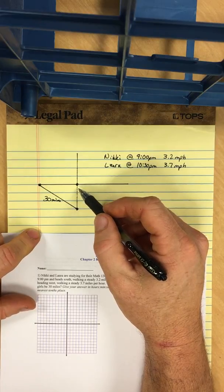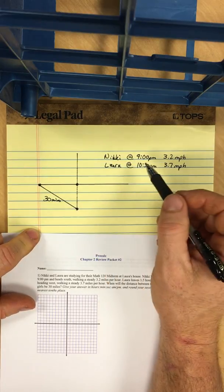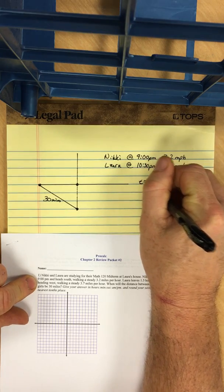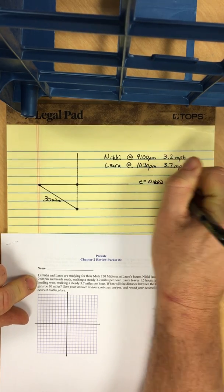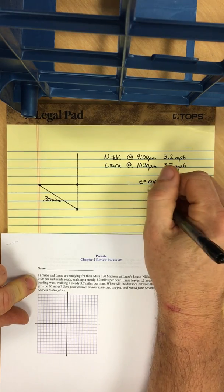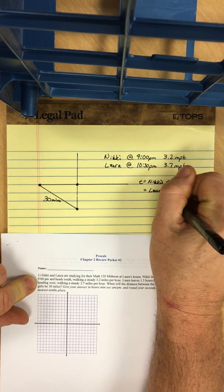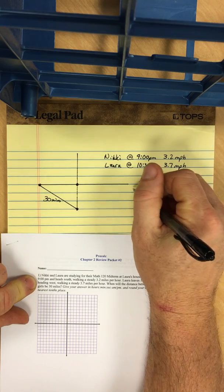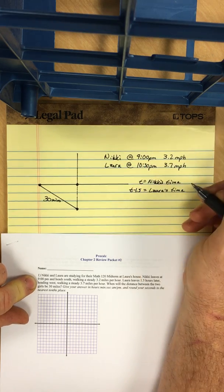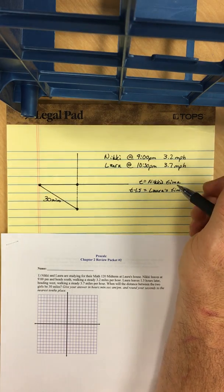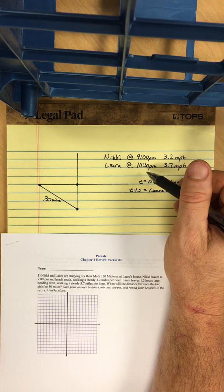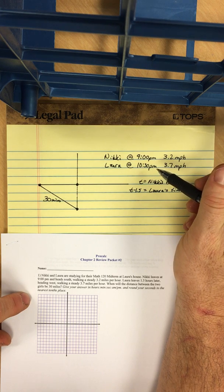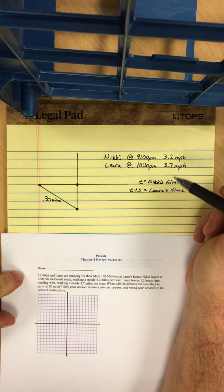We'll call the time that Nikki walks, and Nikki is walking south, we'll call that time t. And then an expression for Laura's time, so Laura's time would have to be t minus 1.5. So if Nikki walks for 3 hours, it would be midnight, and Laura would walk for 1.5 hours since she's leaving at 10:30 p.m.